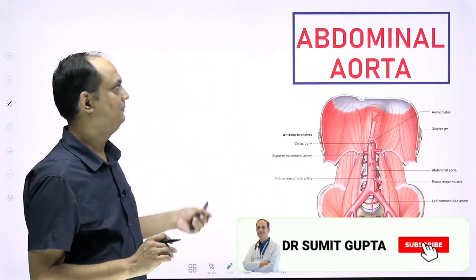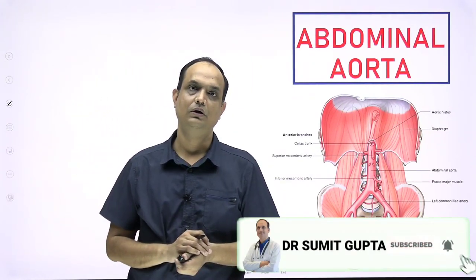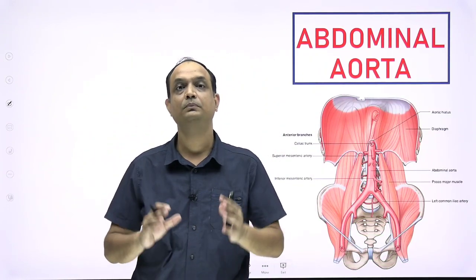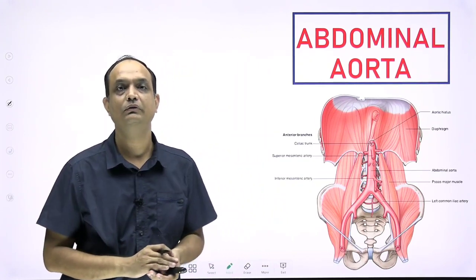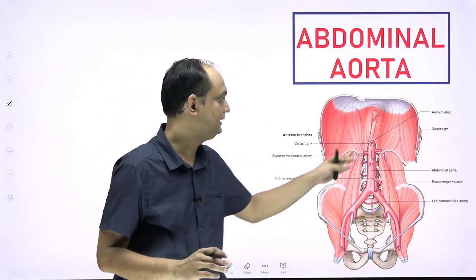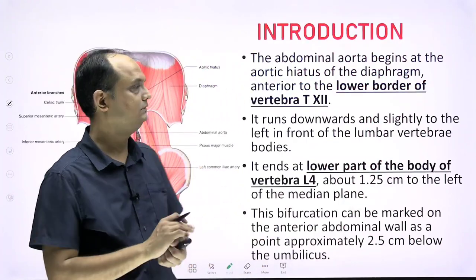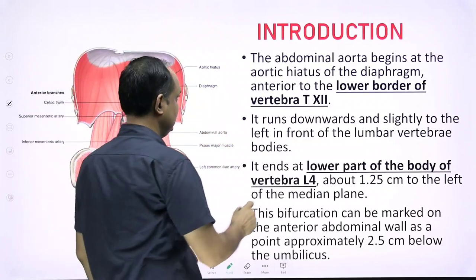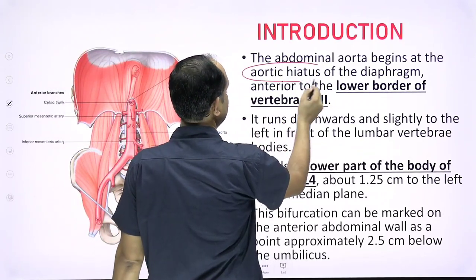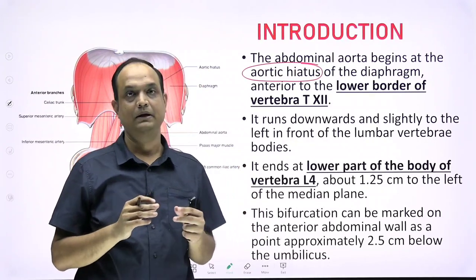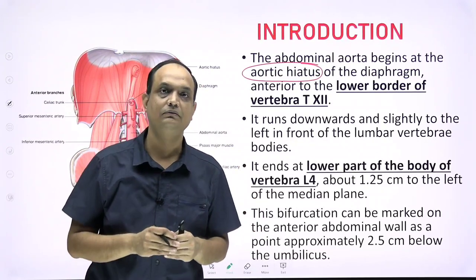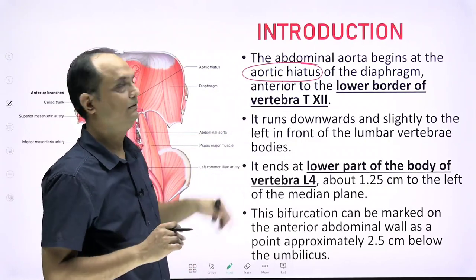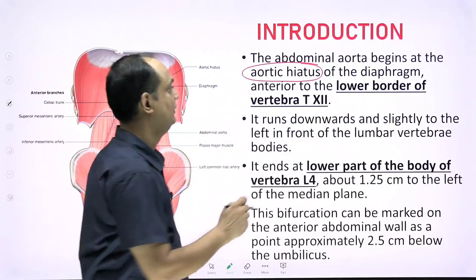Hello students. Today we will discuss the abdominal aorta. The abdominal aorta is a very big artery present on the posterior abdominal wall. The first important point is that the abdominal aorta begins at the aortic hiatus — a gap between the posterior part of the diaphragm and the anterior part of the vertebral column — present at the level of T12.